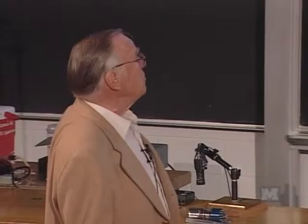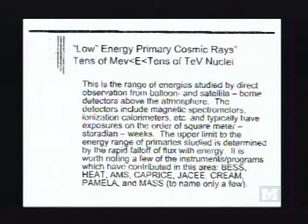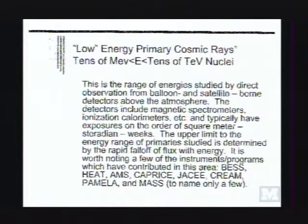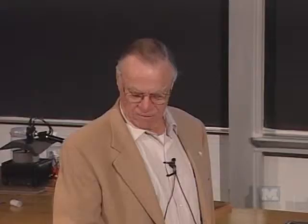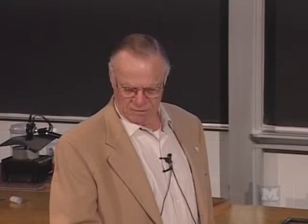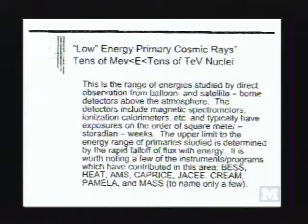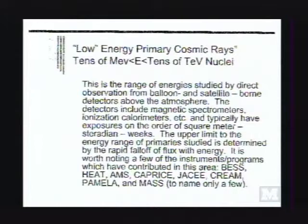Low energy cosmic rays — in the range where the flux is low enough to be studied directly with balloon-borne or satellite-borne detectors above the atmosphere — can use magnetic spectrometers and so on. Notable devices include AMS, the Alpha Magnetic Spectrometer, the program that Professor Ting is involved in and mentioned two weeks ago. It was originally called the anti-matter spectrometer, but NASA decided to rename it the Alpha Magnetic Spectrometer.